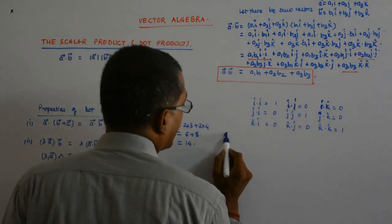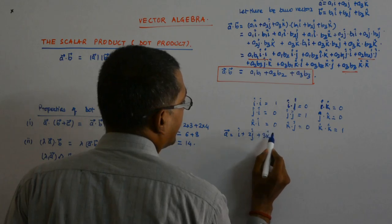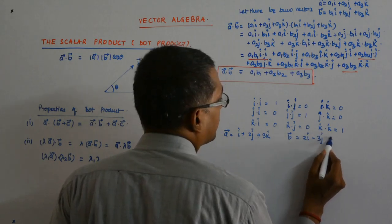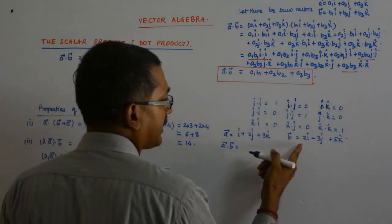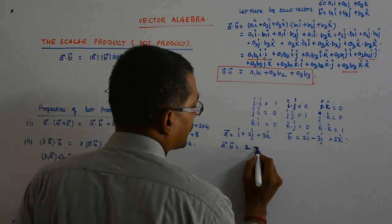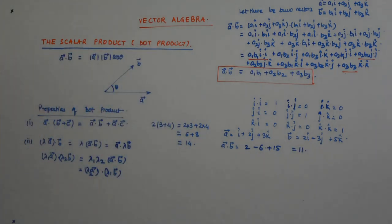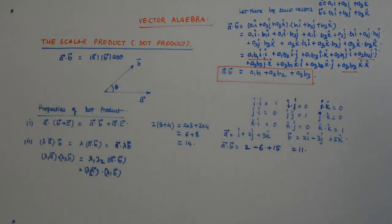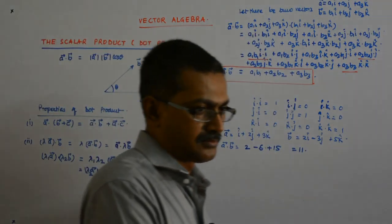So, if maybe a is equal to i cap plus 2 j cap plus 3 k cap and b is 2 i cap minus 3 j cap plus 5 k cap. Then what happens? A dot b will give you 1 into 2, that's 2. 2 into minus 3, that's minus 6. 3 into 5, that's 15. That is equal to 11. It is a scalar. That's how we get the value of a dot b.